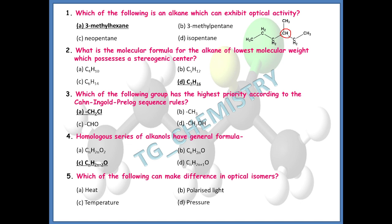The next question asks: which of the following can make a difference in optical isomers? If some compounds are optical isomers, what can differentiate them? The options are heat, polarized light, temperature, and pressure. The right answer is option B — polarized light.